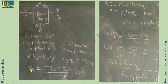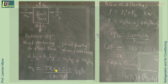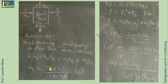Mass flow rate m1-dot can be found from the evaporator capacity: m1-dot equals the evaporator capacity (in TR converted to kW using the multiplier) divided by the enthalpy difference across the evaporator (h1 minus h9). Once m1-dot is known, m2-dot can be obtained from the flash tank energy balance, since all enthalpies are read from the PH diagram.